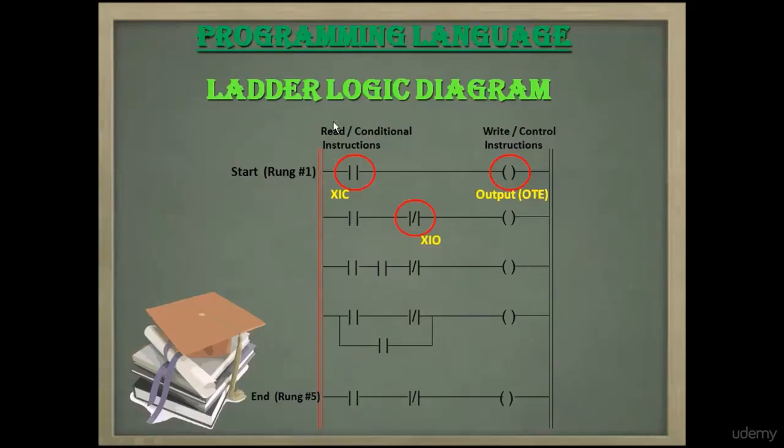For PLC, the programming language is ladder logic diagram. We can control any process by using two types of input or read instructions, namely XIC (examine if close) and XIO (examine if open), while output is considered as write and control instruction.